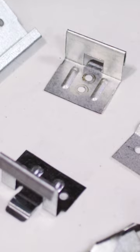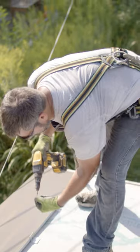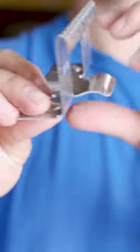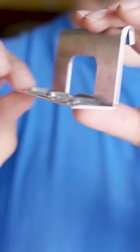A clip is a concealed anchor that attaches a roof panel to the substrate with the use of fasteners. Clips can be made from galvalume, galvanized steel, stainless steel, copper, or aluminum.